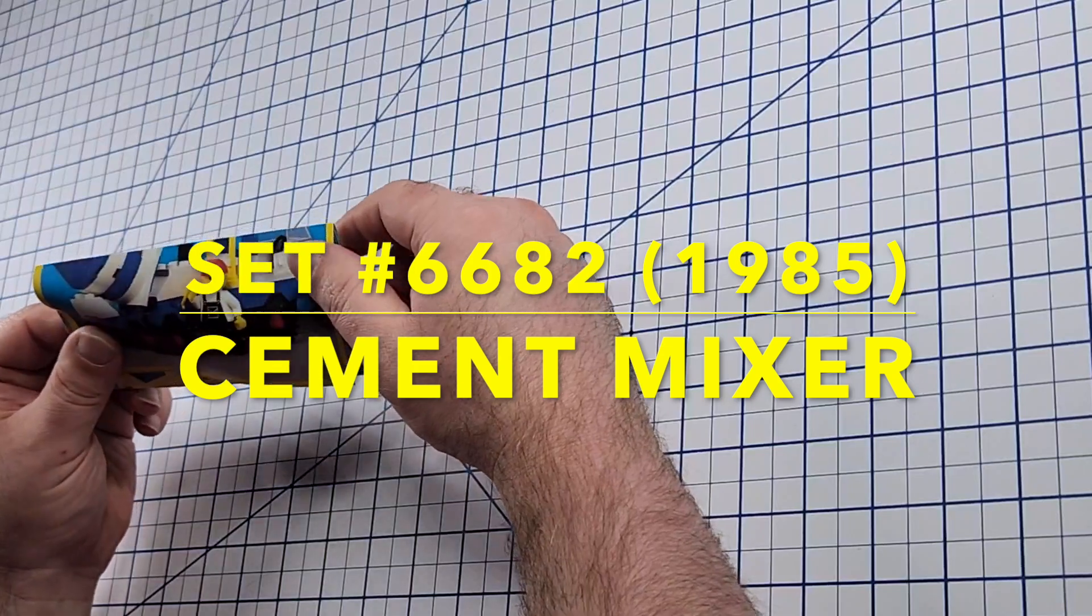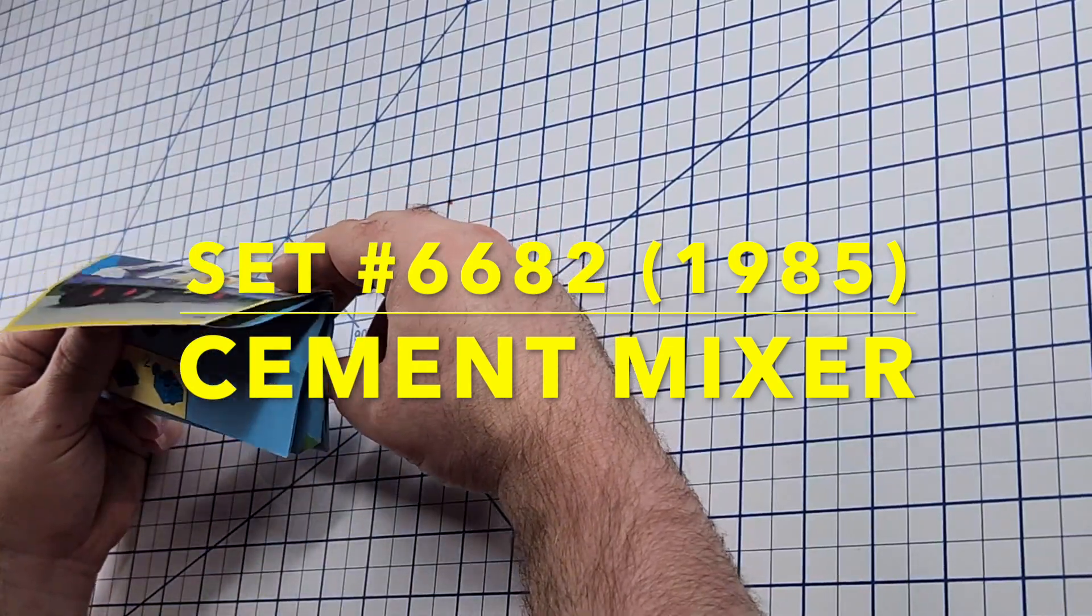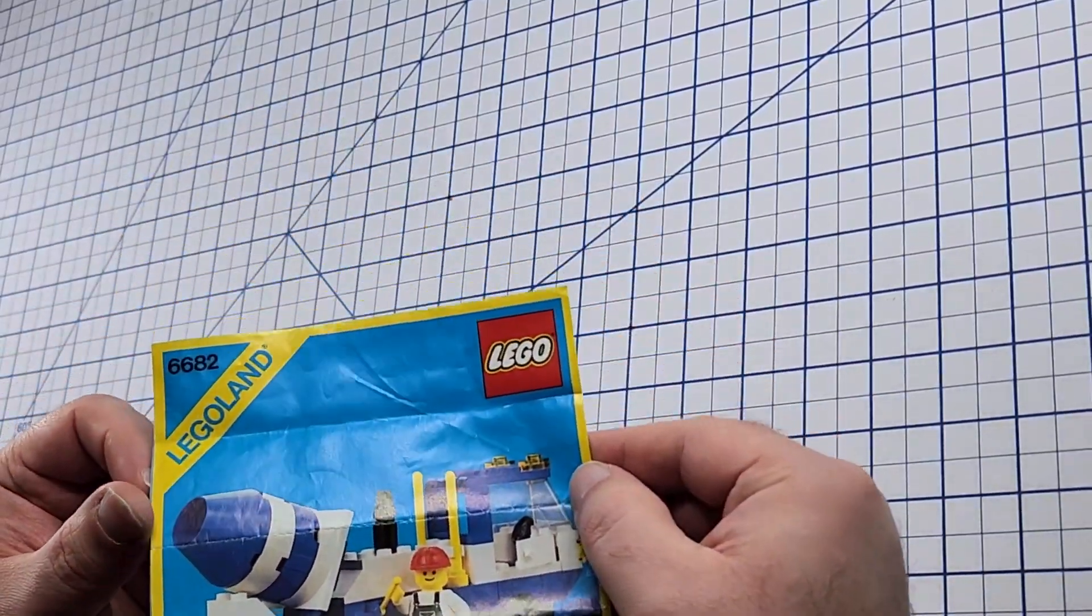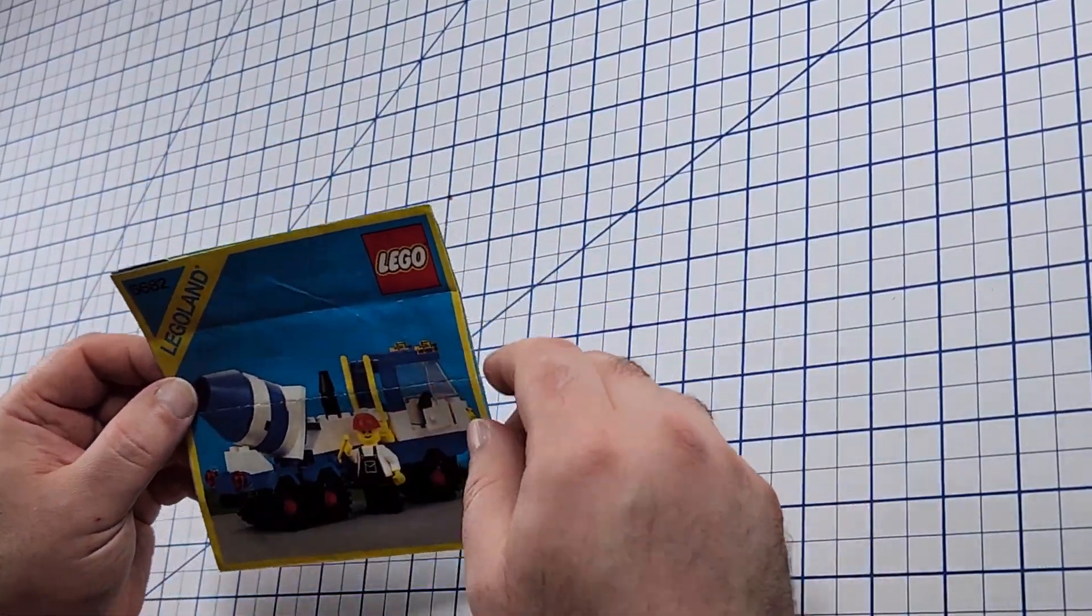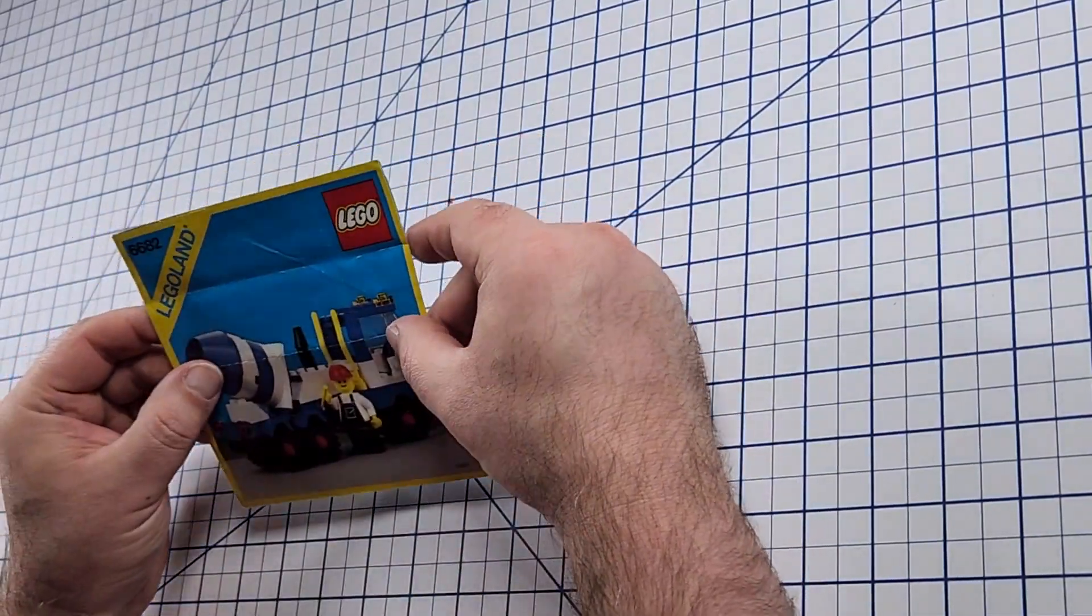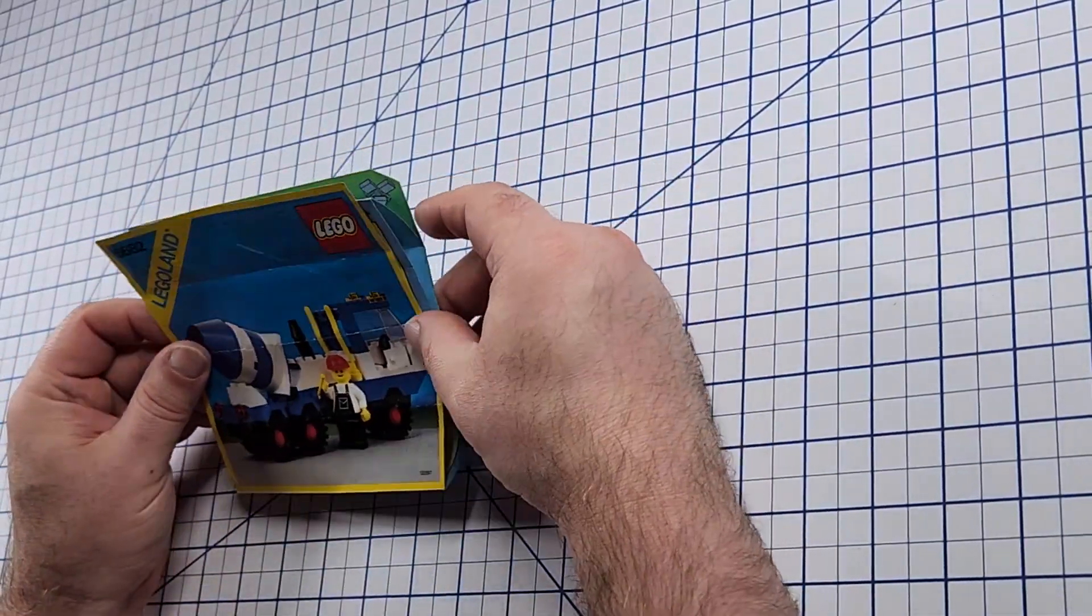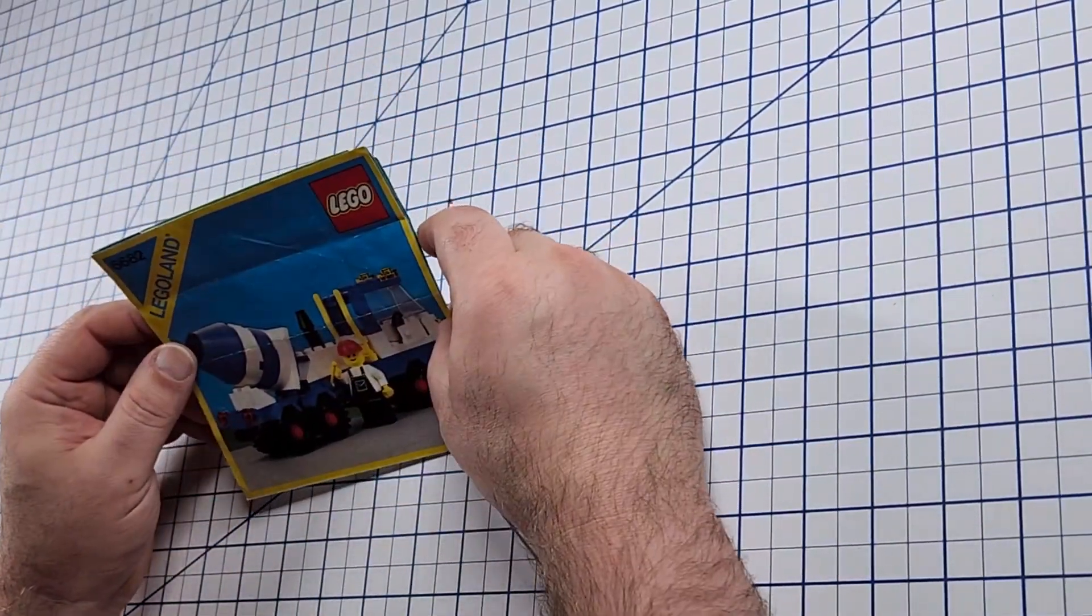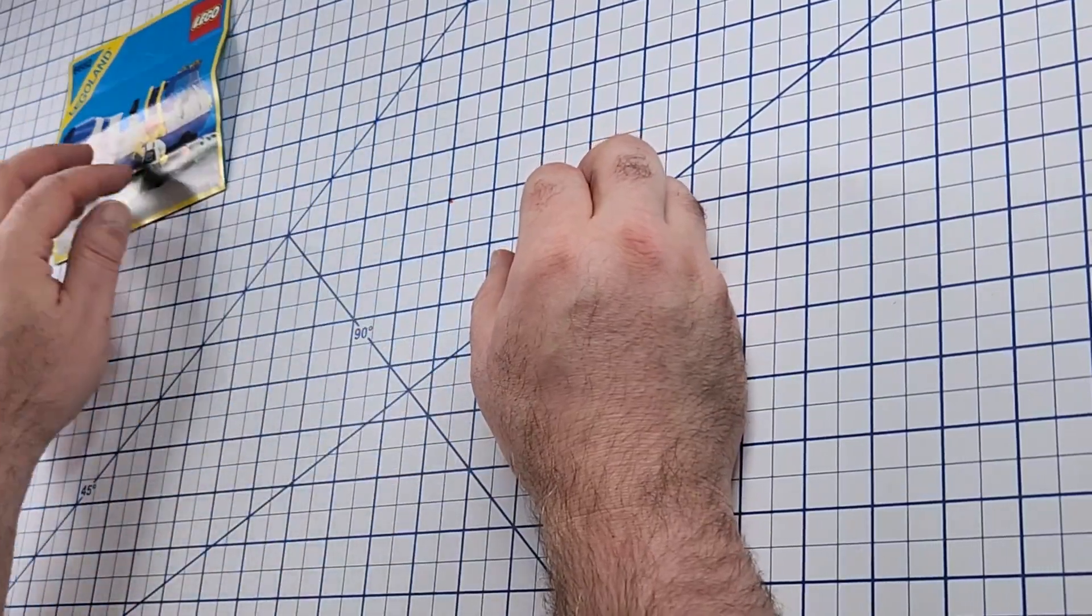And we have in our possession, in our little paws, we have complete instructions. Original paper instructions for this kit. In what I would call, not mint, but excellent shape. I mean, you can tell they've been used, but they're not torn up. They're not taped. Very nice set of instructions with this kit.